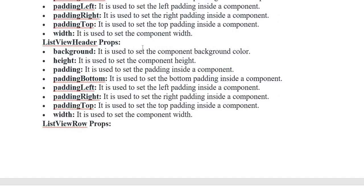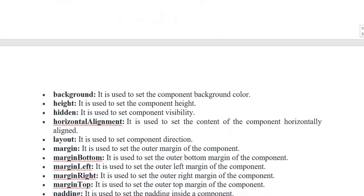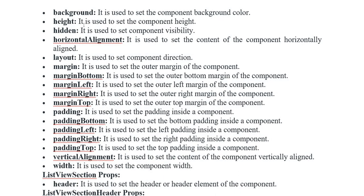ListView Header props: Background — used to set the component background color. Height — used to set the component height. Padding — including bottom, left, right, and top. ListView Row props: Background — used to set the component background color. Hidden — horizontal alignment — used to set the content of the component horizontally. Layout — used to set component direction. Margin and padding — top, bottom, left, right. Vertical alignment — used to set the content vertically. Width — used to set the component width.